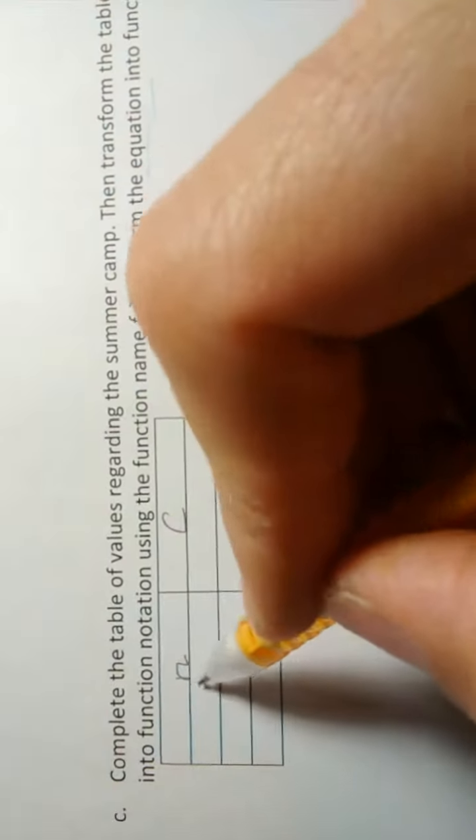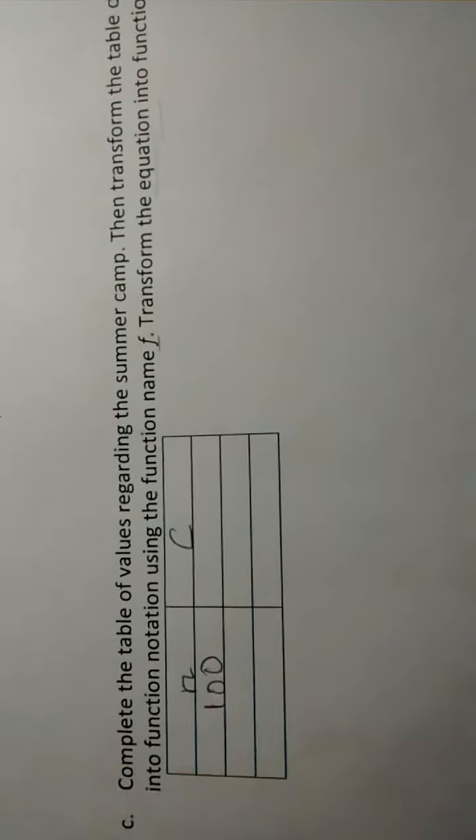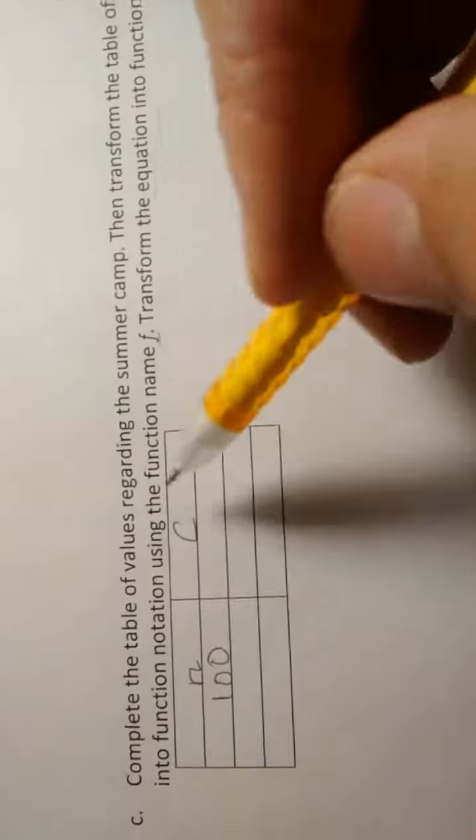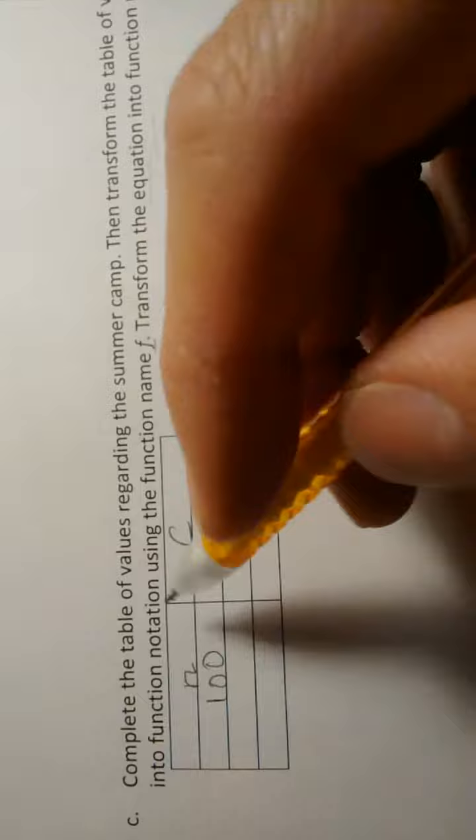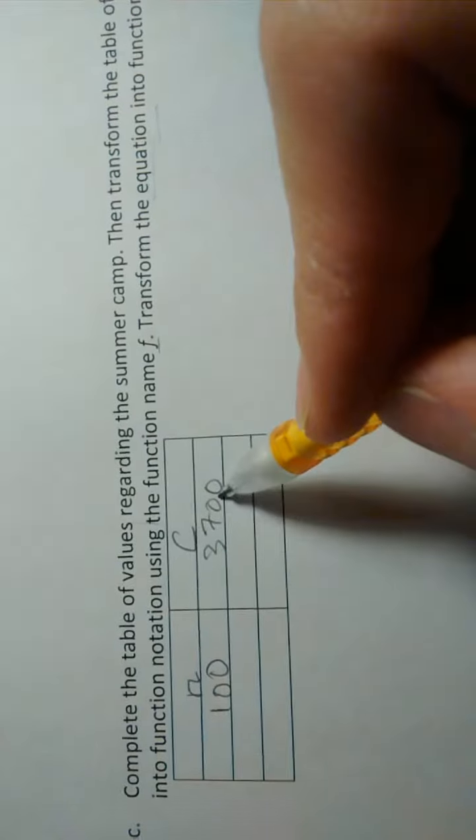So here's what I would like for us to do here. Let's take some values here for a number of campers. Say we have 100. After you're doing your calculation, multiply by 25 and then add 1,200, you're going to get 3,700. So when you have 100 campers, that's going to be your cost.